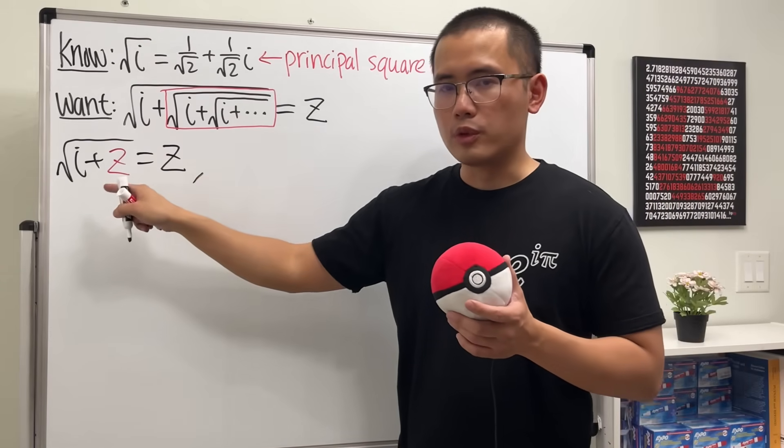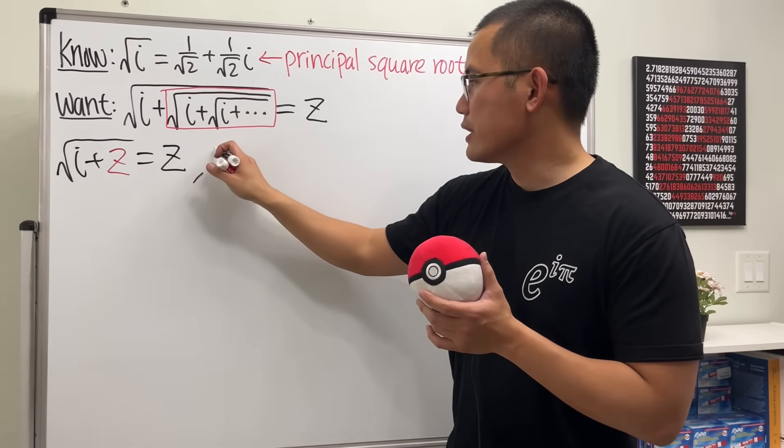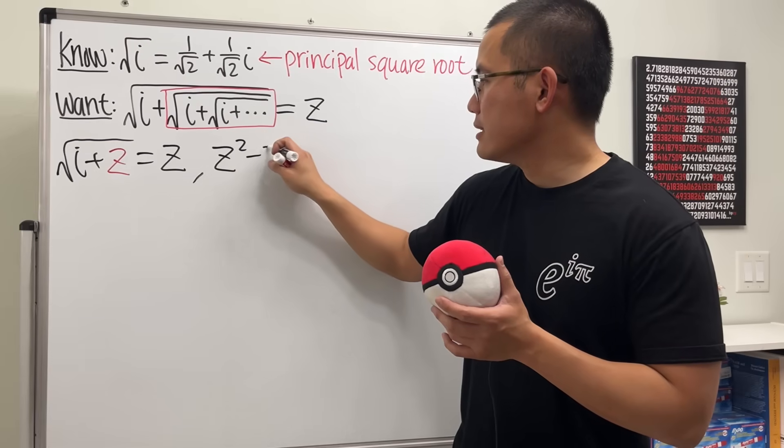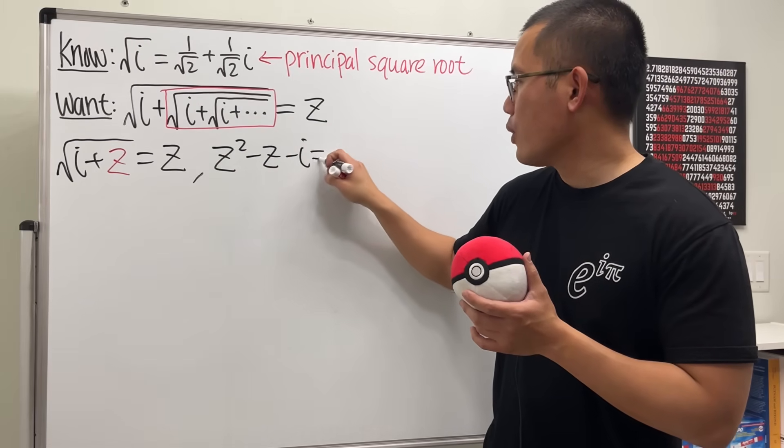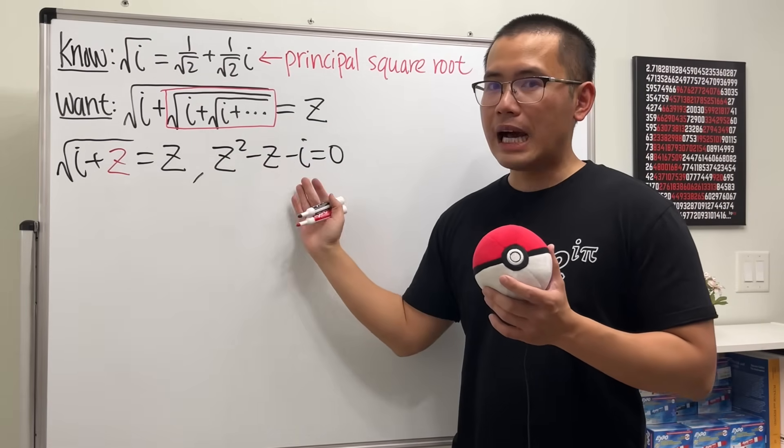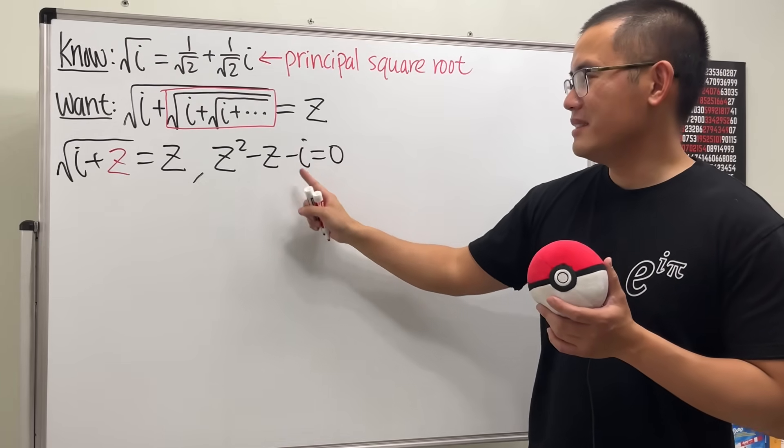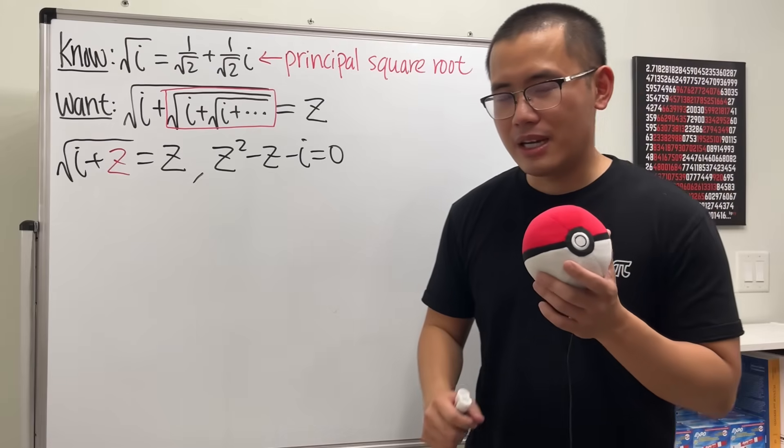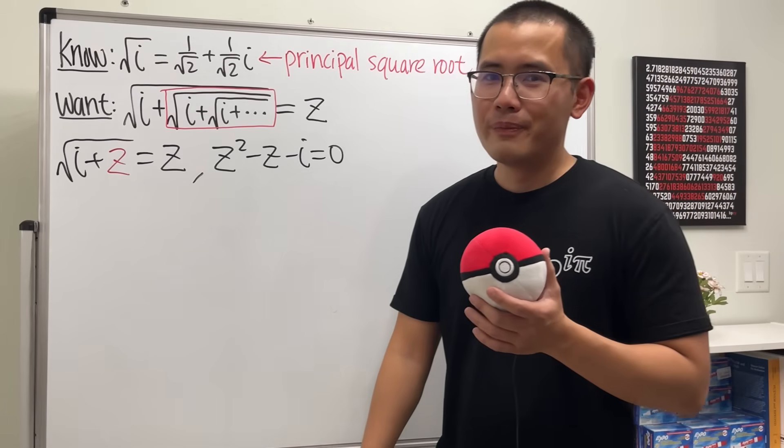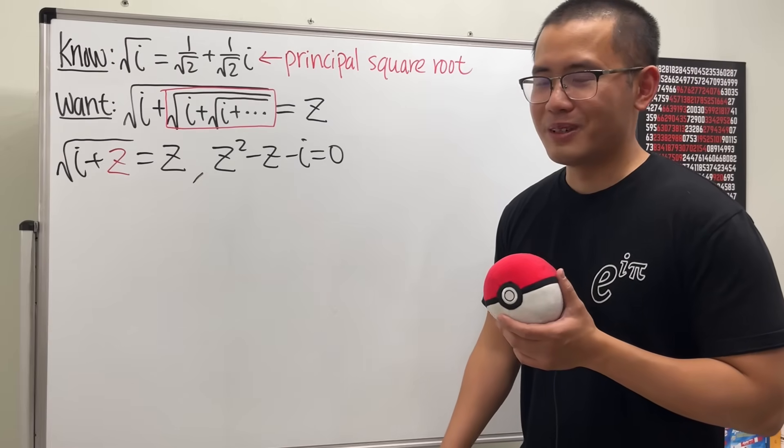And then from here, we can just square both sides and then move things around, and we'll just get z squared minus z minus i equals 0. And we have a complex quadratic equation, because we have z being negative i. And that's just the complex quadratic formula. Why not? There's no complex quadratic formula, but...